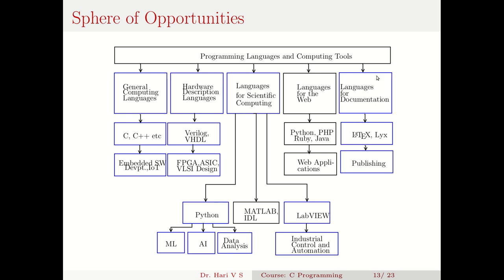Languages for documentation are useful for every engineer, because in every organization you have to make reports, proposals, and presentations. Under general computing languages, you have languages like C and C++. As an electronics student, you need a thorough understanding of C programming because in your career you will write a lot of hardware drivers and work with embedded systems everywhere. C is the lowest-level high-level language — it works at the hardware level, so if you want to communicate with systems at a very primitive level, you need a good understanding of C. A knowledge of C is very useful if you go into the embedded industry, including IoT.